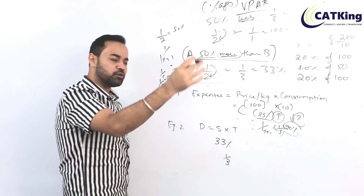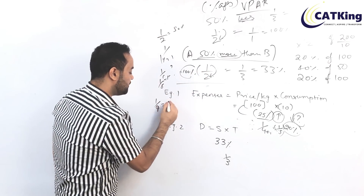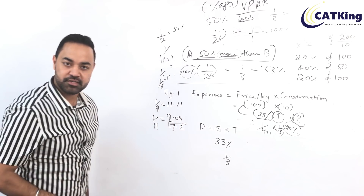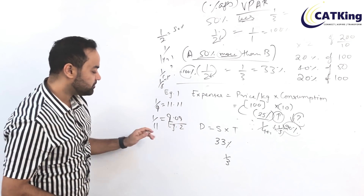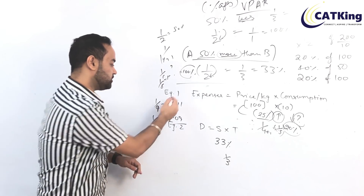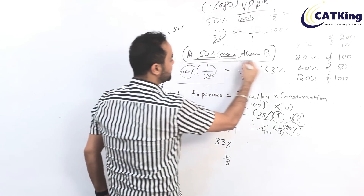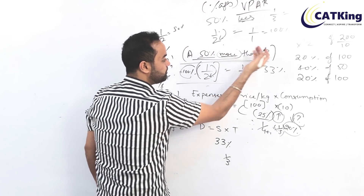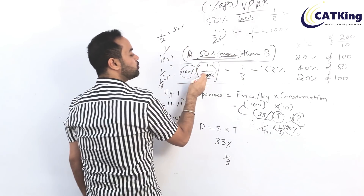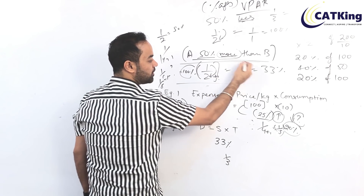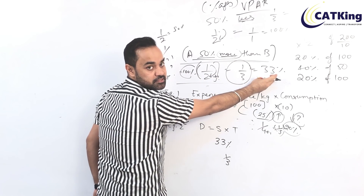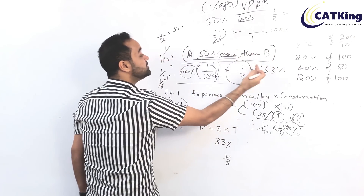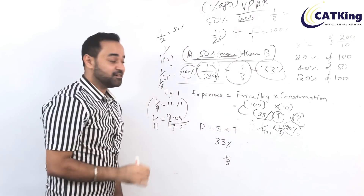Continuing: 1/9 is 11.1%, 1/11 is 9.09%. Coming back to the example — A is 50% more than B, that means 1 by 2. So B less than A is 1 by (2+1) = 1 by 3, which is 33%. So if A is 50% more than B, then B is 33% less than A. How cool is that?